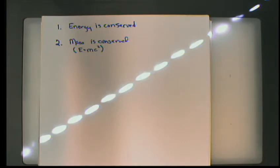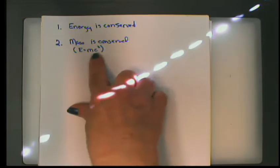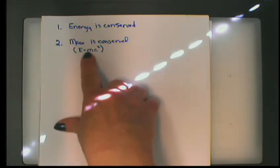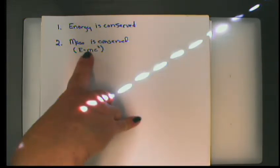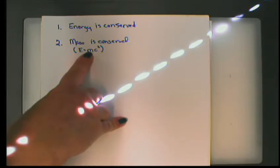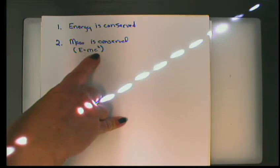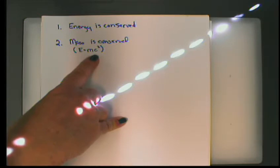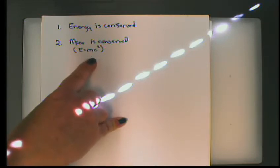The speed of light is constant. There are some very interesting consequences of this equation. One is that time and space actually dilate and expand in order to keep the speed of light constant. So our perceptions in this universe are a little different than what we think they are. If you ever have an opportunity, take a modern physics class.